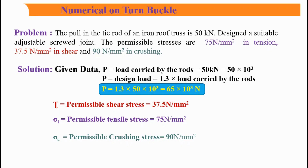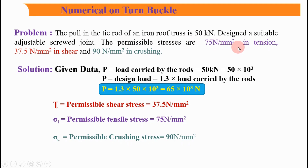Hello friends. In the previous video we saw the design procedure for turnbuckle. Now in this video we are going to see a numerical on turnbuckle. The problem tells us: the pull in the tie rod of an iron roof truss is 50 kilo Newton. Design a suitable adjustable screw joint. The permissible stresses are 75 N/mm² in tension, 37.5 N/mm² in shear, and 90 N/mm² in crushing.